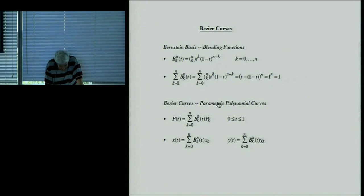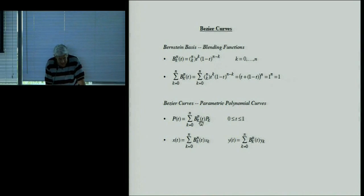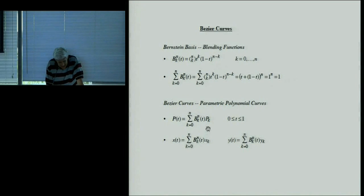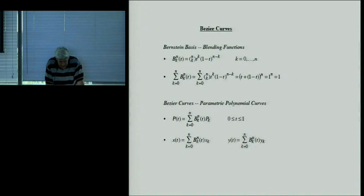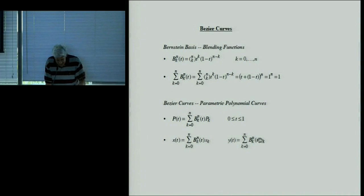We take these basis functions, take some points P_k, multiply them and add. That generates a curve as a function of T. If the points P_k lie in the plane, we get a curve in the plane — shorthand for two equations, one for the X coordinate and one for the Y coordinate. As T varies, X and Y vary and we get a curve in the plane. That's called the Bézier curve.